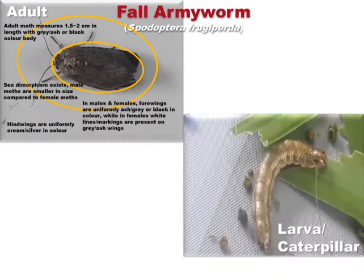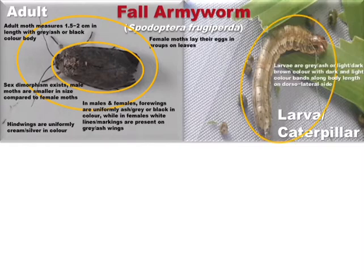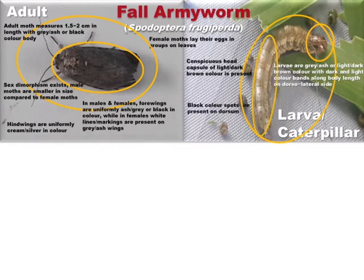The larvae are ash, gray, black, light brown, or dark brown in color, and are covered with bands of light or dark color on the dorsum along the body length. There are black spots on the dorsum along the body length. The head capsule is light or dark brown in color and is conspicuous.